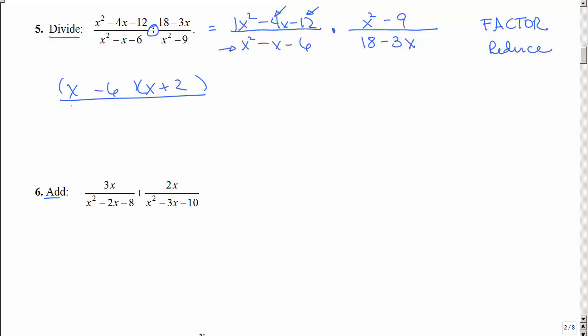Here I've got a coefficient of 1. So again, just say what multiplies to get negative 6 but adds to get negative 1? That would be negative 3 and positive 2, multiplied by, now that is the difference of two squares. This is weird. It's just a GCF.